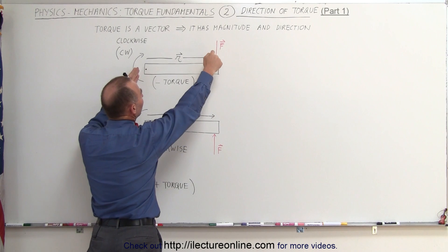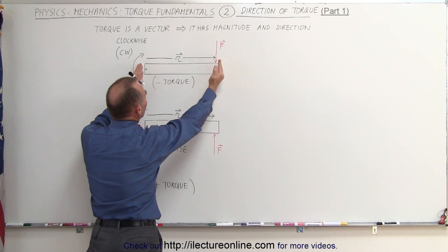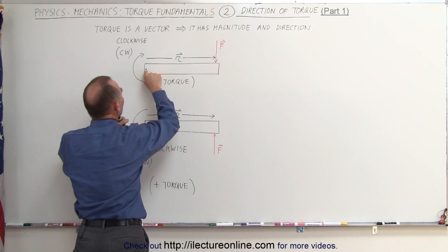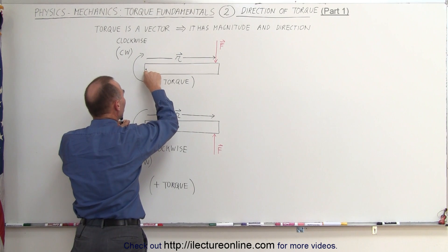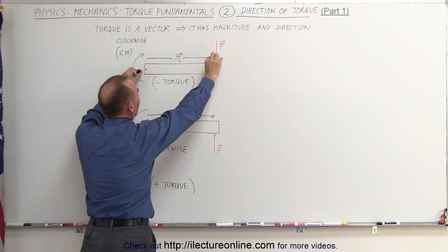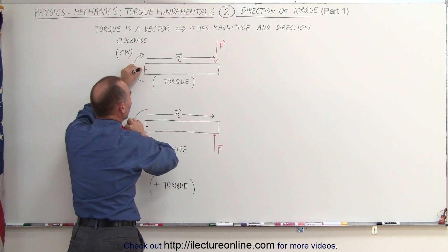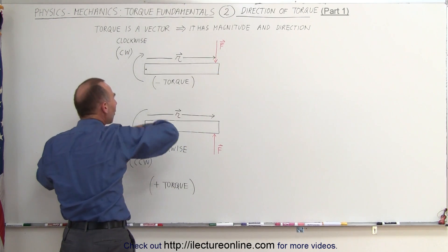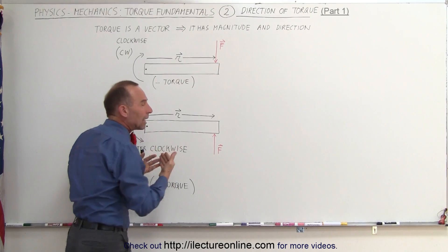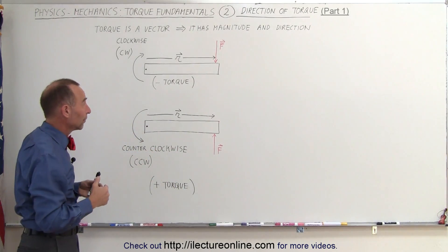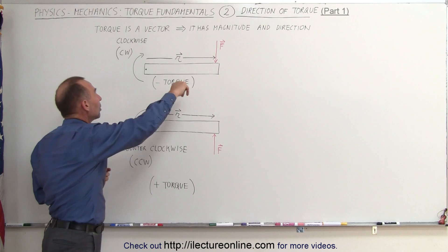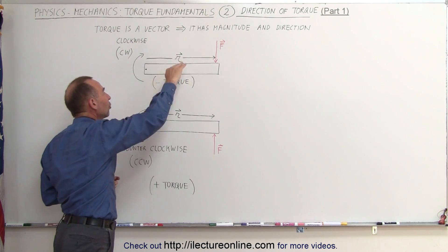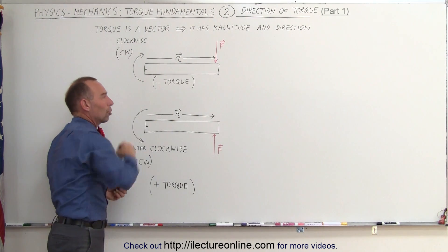In this case, you can see that if this was the only force acting on this object right here, and this object could only turn at this point, this is the point of rotation, that would cause this object to rotate in a clockwise direction. So we call that a clockwise direction for the torque. It turns out that the sign associated with a clockwise direction is negative. So we would consider this a negative torque.